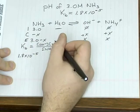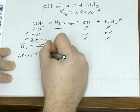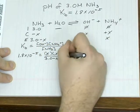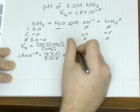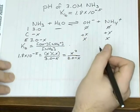You know, Kb is equal to 1.8 times 10 to the negative 5, which is equal to x times x over 3 minus x, which is equal to x squared over 3 minus x.